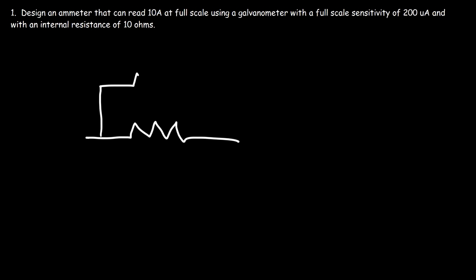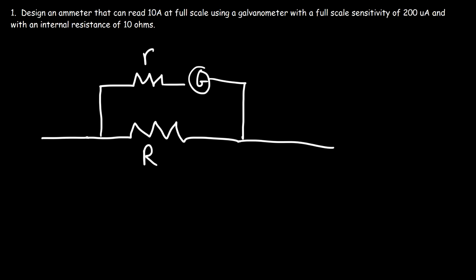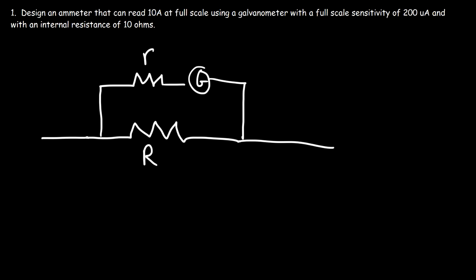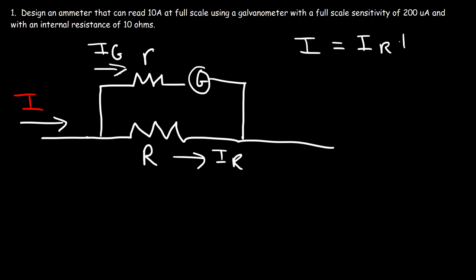To do this, you need a shunt resistor — capital R — and across that is the galvanometer, represented by the symbol G. Lowercase r is the internal resistance of the galvanometer. This combined picture represents the ammeter. The current being measured flows in, the current through the shunt resistor is called IR, and the current through the galvanometer is called IG.